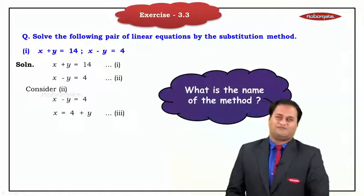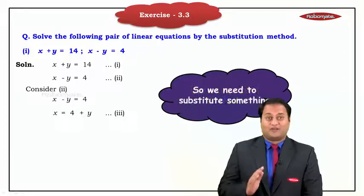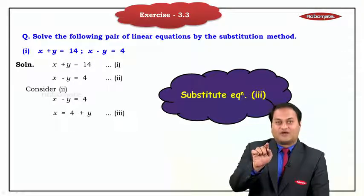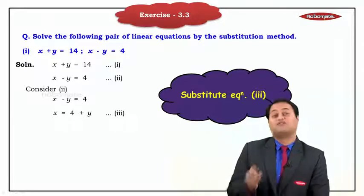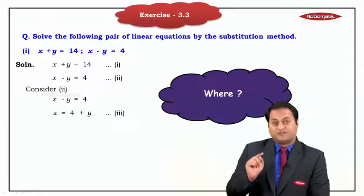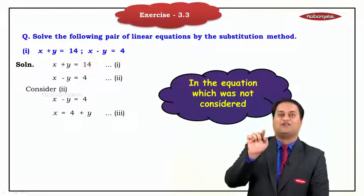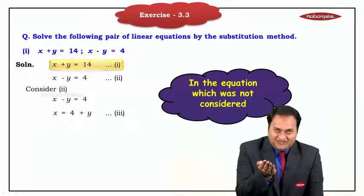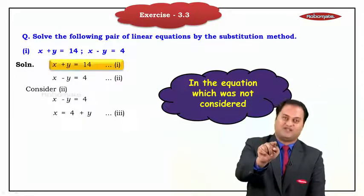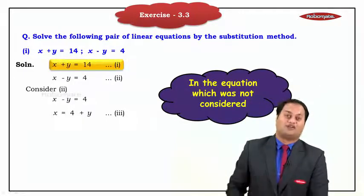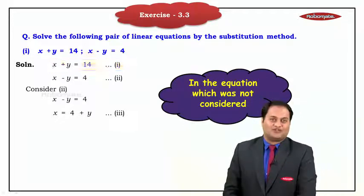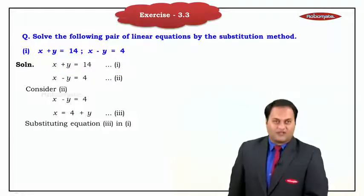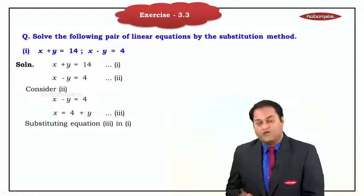Now, the name of the method is the substitution method, so we need to substitute something. We substitute equation number 3 that we have got. The question is: where to substitute? We substitute in the equation that we did not consider, which is equation number 1. From the presentation point of view, your next statement will be: substituting equation number 3 in equation number 1 — because equation 1 was not considered.